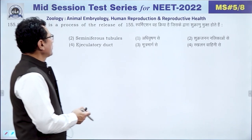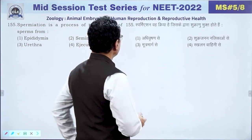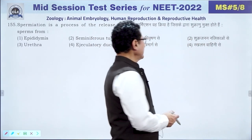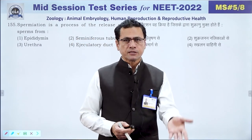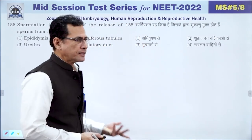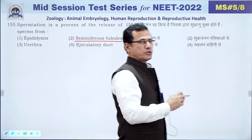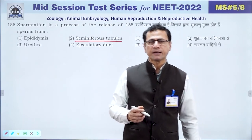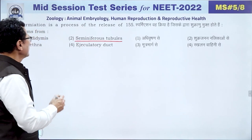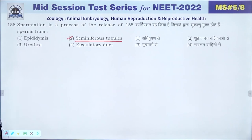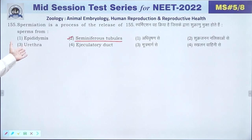Question 155: Spermiation is the process of release of sperms from the testis — specifically from the seminiferous tubules into the epididymis. The answer is 2 — release from testis (seminiferous tubules).